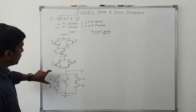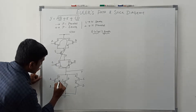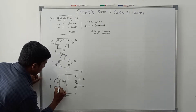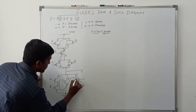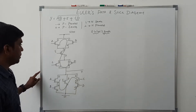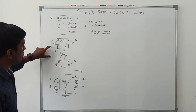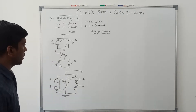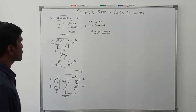The same order we follow for the pull-down network: A, B, E, C, and D. Whichever order you follow in the pull-up network, the same order you follow in the pull-down network. So this is the Euler path for this Boolean expression: A, B, E, C, D.